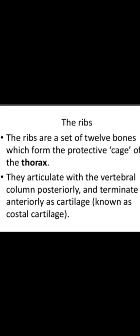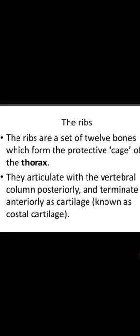Now we are studying the ribs. There are 12 pairs of ribs. The ribs are a set of 12 bones which form a protective cage around the thorax. Each rib connects to the vertebral column posteriorly and terminates anteriorly at a cartilage known as costal cartilage. The ribs protect the heart and lungs, which are the internal visceral organs, and each pair connects with the vertebral column.